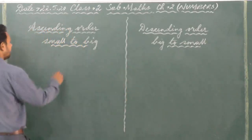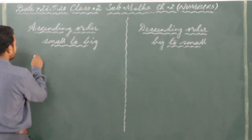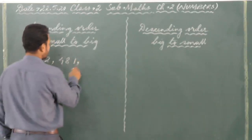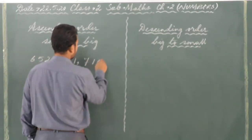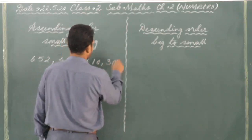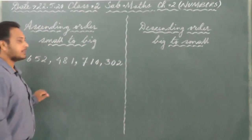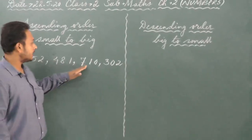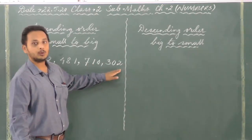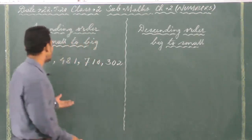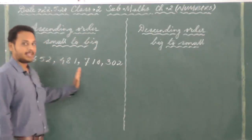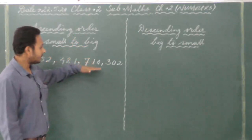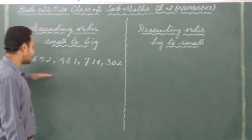For example, suppose I have written some numbers like this: 652, 481, 710, 302. Now what are we going to do here? We are going to arrange these numbers in ascending order. Ascending means from small to big. Whichever number is the smallest, that comes first.